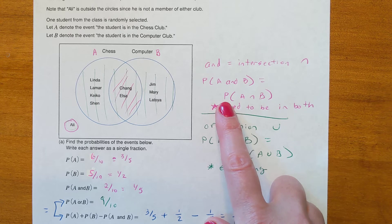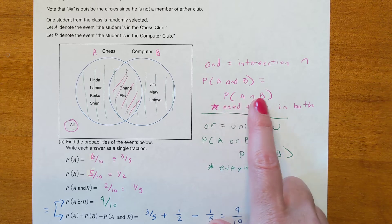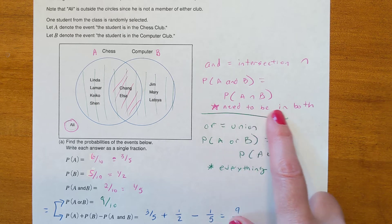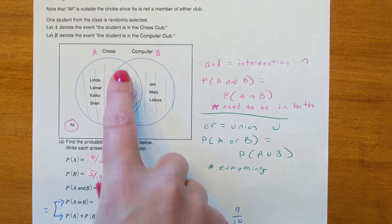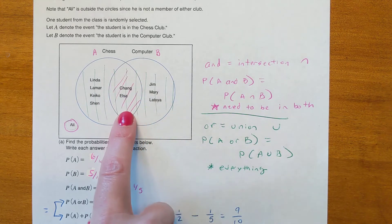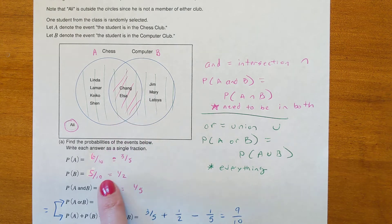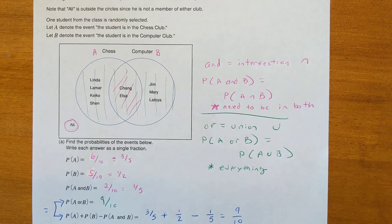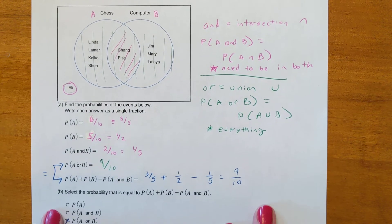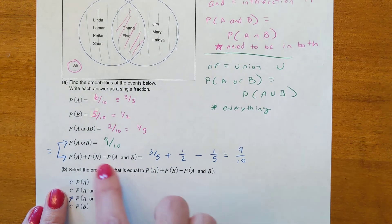We write it as the probability of A intersection B — it's when students have to be in both clubs. In both the computer and chess club were Chan and Elsa, so that's two out of ten, or one-fifth.